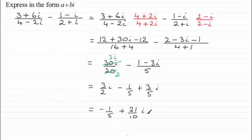And that's in the form a plus bi. If we're asked to work out what a and b were, then a would be minus 1 fifth and b would obviously be 21 over 10.